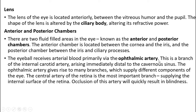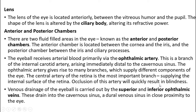The eyeball receives blood primarily from the ophthalmic artery, a branch of the internal carotid artery rising just distal to the cavernous sinus. The ophthalmic artery gives rise to many branches supplying different components of the eye. The central artery of the retina is the most important branch, supplying the internal surface of the retina; occlusion of this artery will quickly result in blindness. Venous drainage is by superior and inferior ophthalmic veins, which drain into the cavernous sinus.